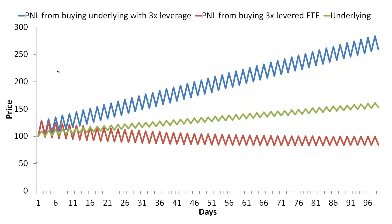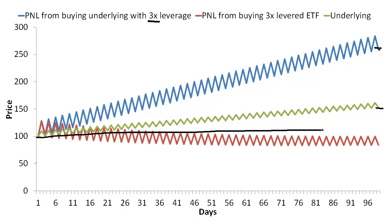It's quite easy to find scenarios where you, the investor, might be right about the future direction of the underlying but still lose money because you held the levered ETF for more than one day and were inherently making an extremely complicated bet on the path of the underlying. This graph shows a scenario where the underlying goes from 100 on day one to about 150 on day 100. If you had bought the underlying and levered it up 3-to-1, the value of that bet would have gone from $100 to $250. However, if you had bought a 3x levered ETF using the same underlying and held it for 100 days, you would have lost money over that period.